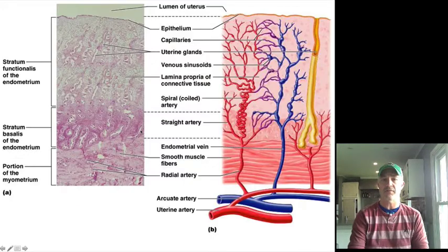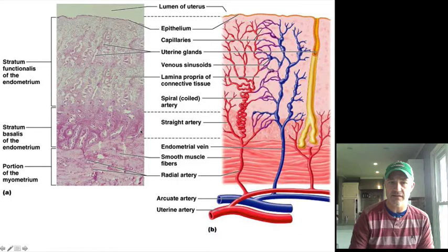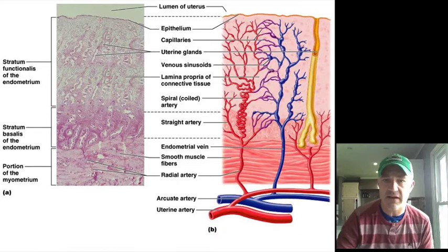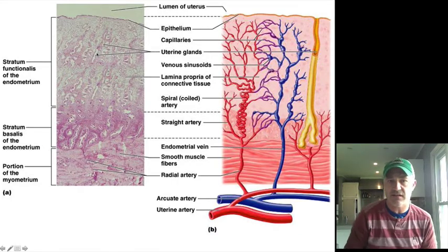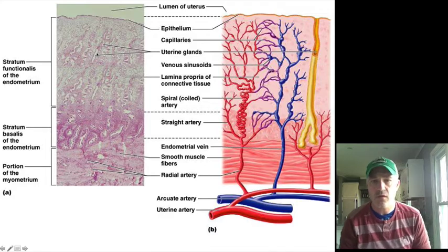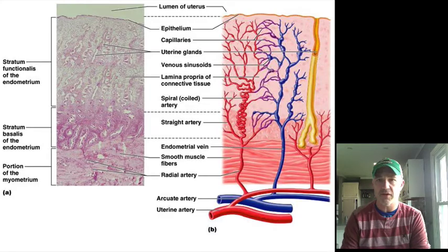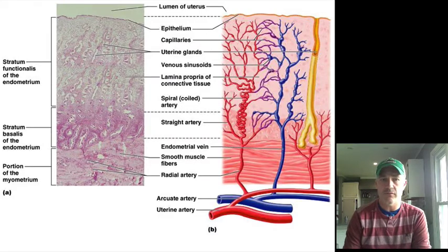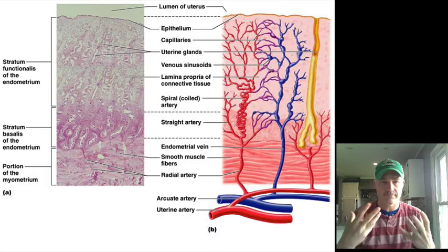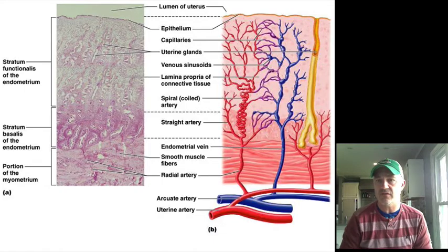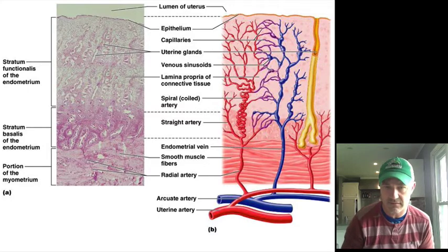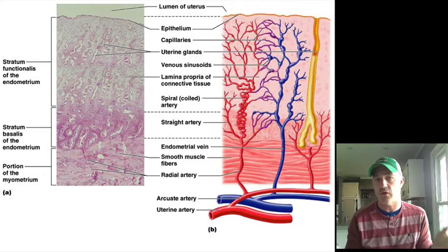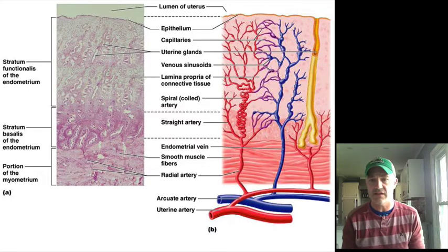The endometrium is a simple columnar epithelium with numerous blood vessels and uterine glands—invaginations into the tissue. It has a very good blood supply and will become even more vascular if pregnancy occurs. This highly vascular lining is what supports the developing embryo and fetus.